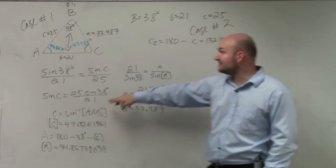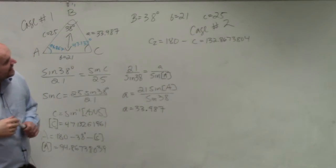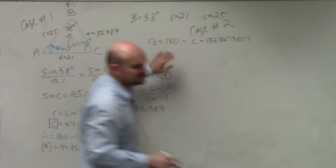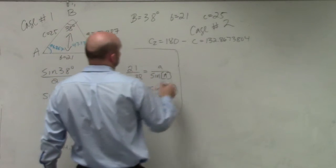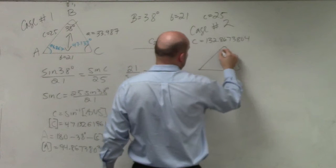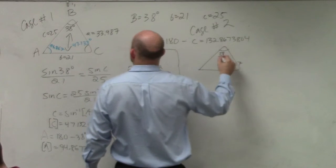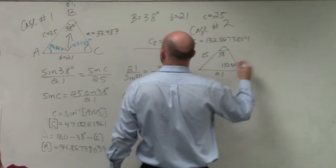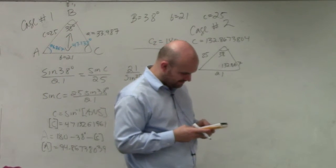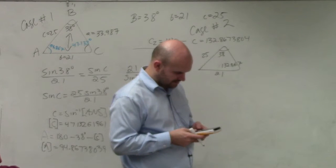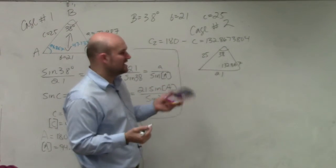So again, originally though, we found out we have a second case. My angle C could be 47 or it could also be 180 minus C, which is 132.8673804. So let me go back and store this again. And let me draw my triangle. You can see how much work I'm spending here. So let's see, I have 38, this is 132.867, this is 25, this is 21, and I don't know any other information. So I've got to figure out what that value is. So I'm going to do 180 minus C.